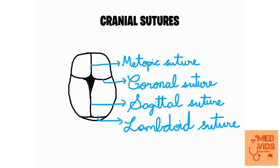Let's see the basics of cranial sutures. Anteriorly we have the metopic suture, which is present between the frontal bones — this suture is the first to fuse of all. In the coronal direction we have the coronal suture. Posteriorly we have the sagittal suture, which goes in the sagittal direction and splits posteriorly into two sutures known as the lambdoid sutures.